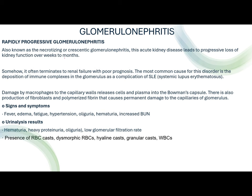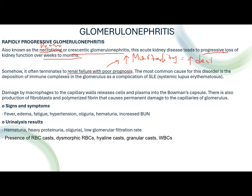The second type is rapidly progressive glomerulonephritis, also known as necrotizing or crescentic glomerulonephritis, where the kidney leads to a progressive loss of function over weeks to months. It often terminates in renal failure with poor prognosis — meaning higher chance of mortality. The most common cause is deposition of immune complexes in the glomeruli as a complication of systemic lupus erythematosus (SLE).